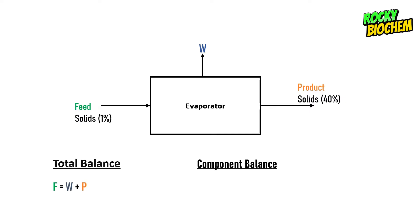Component balance refers to the balance written with respect to a particular component. For solids: F × 0.01 = W × 0 + P × 0.4. We multiply each stream by the fraction of the component in it. The feed has 1% solids so we multiply F by 0.01; water has no solids so we multiply W by 0; and the product has 40% solids so we multiply P by 0.4.